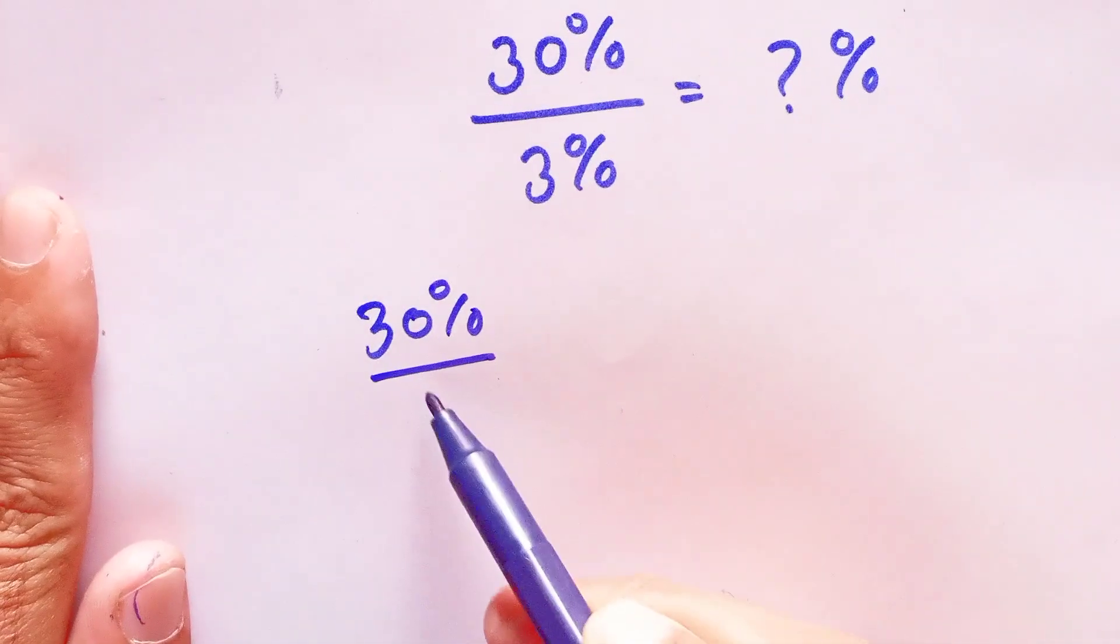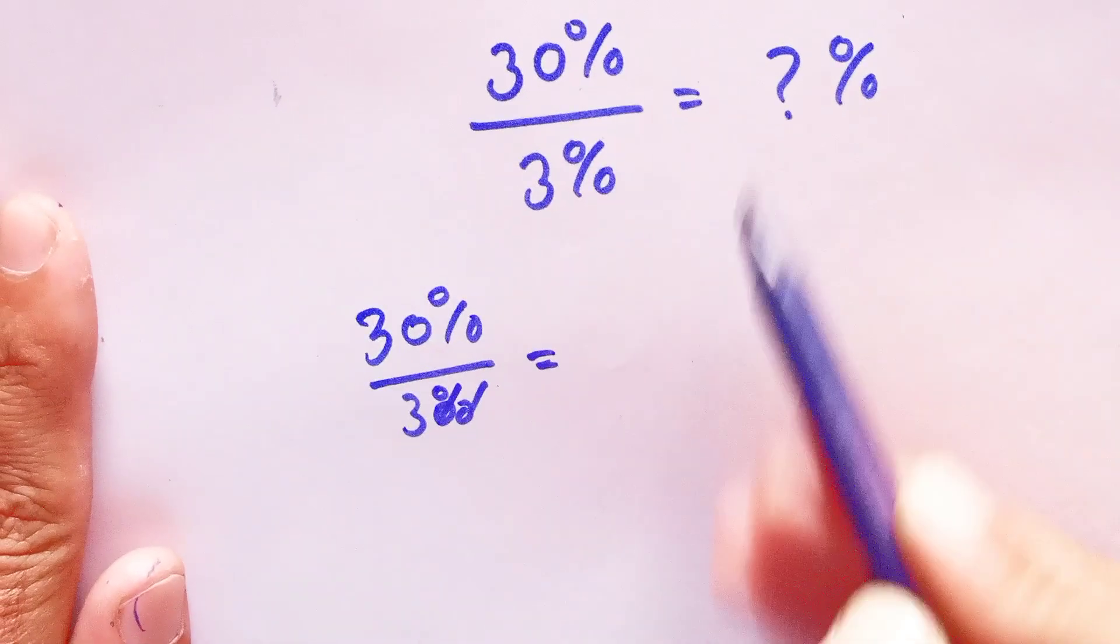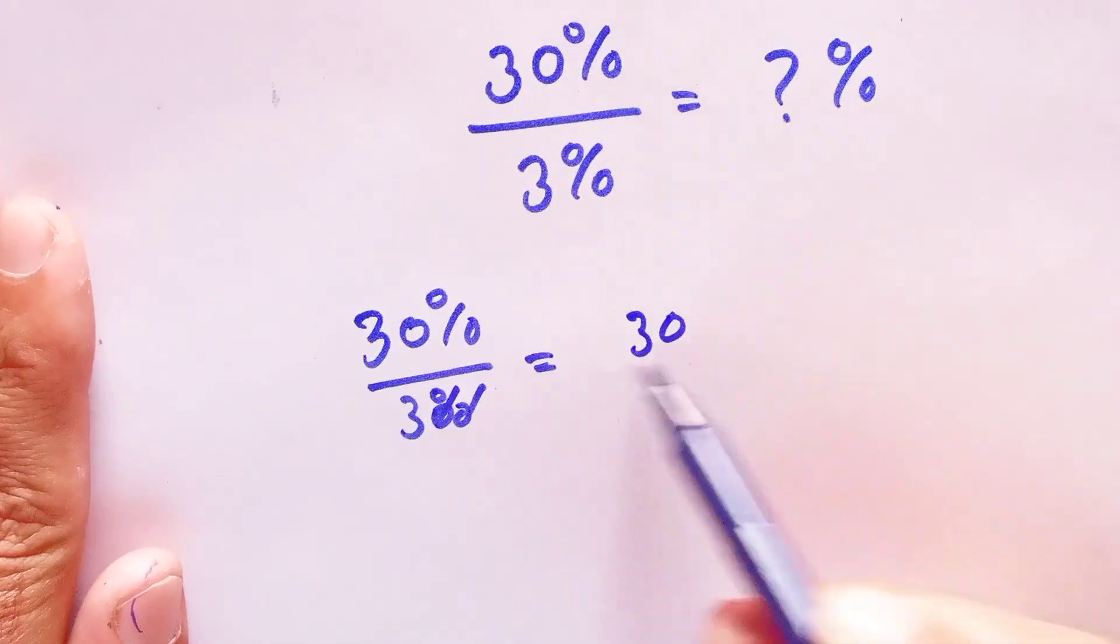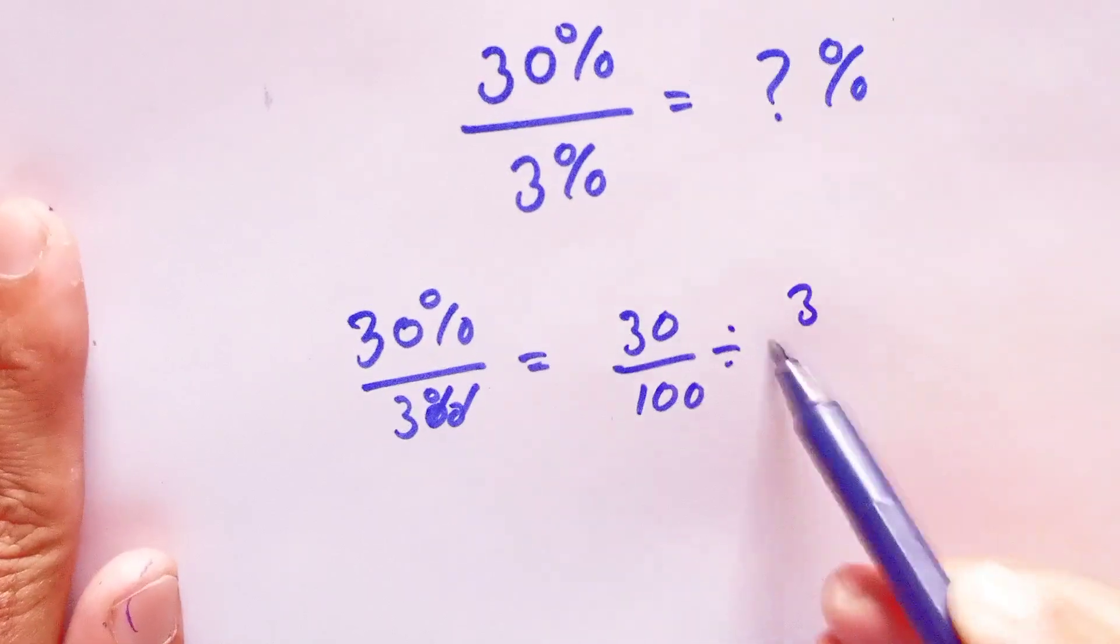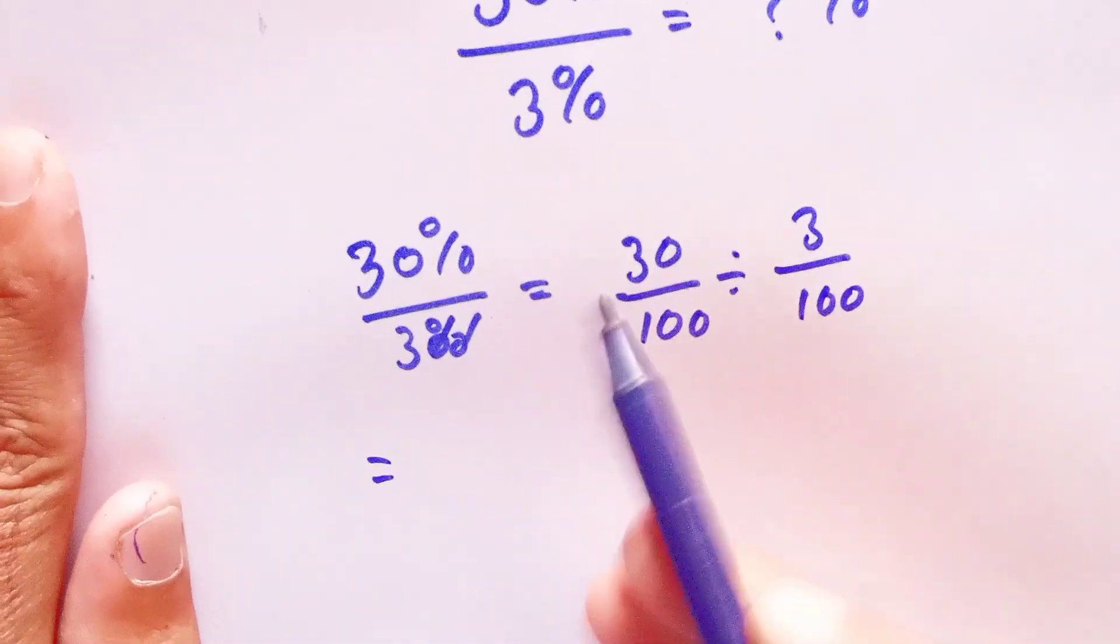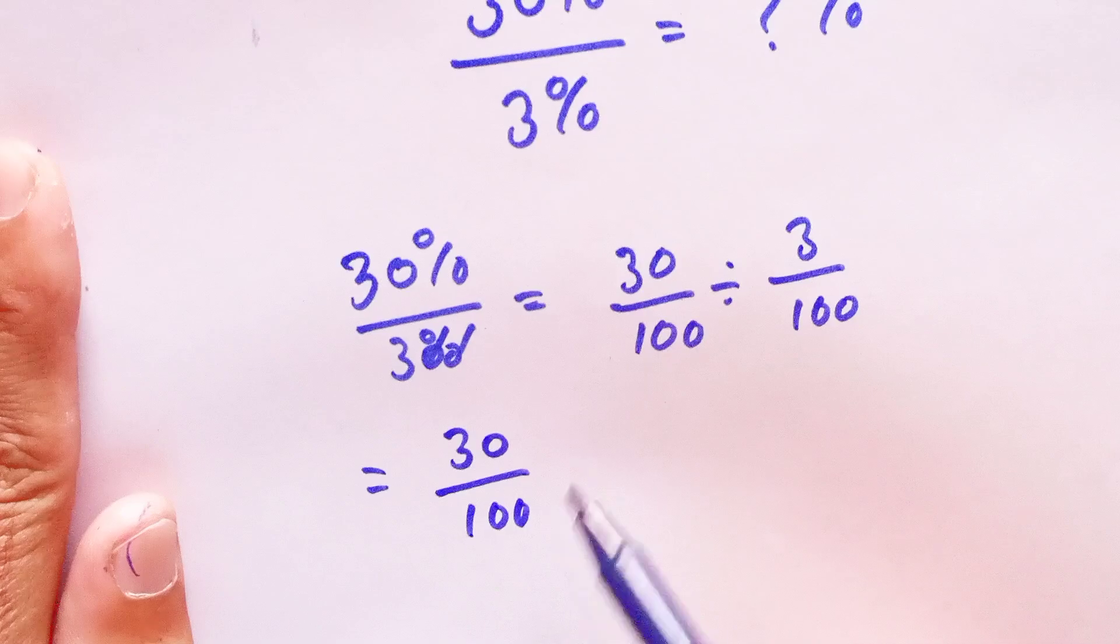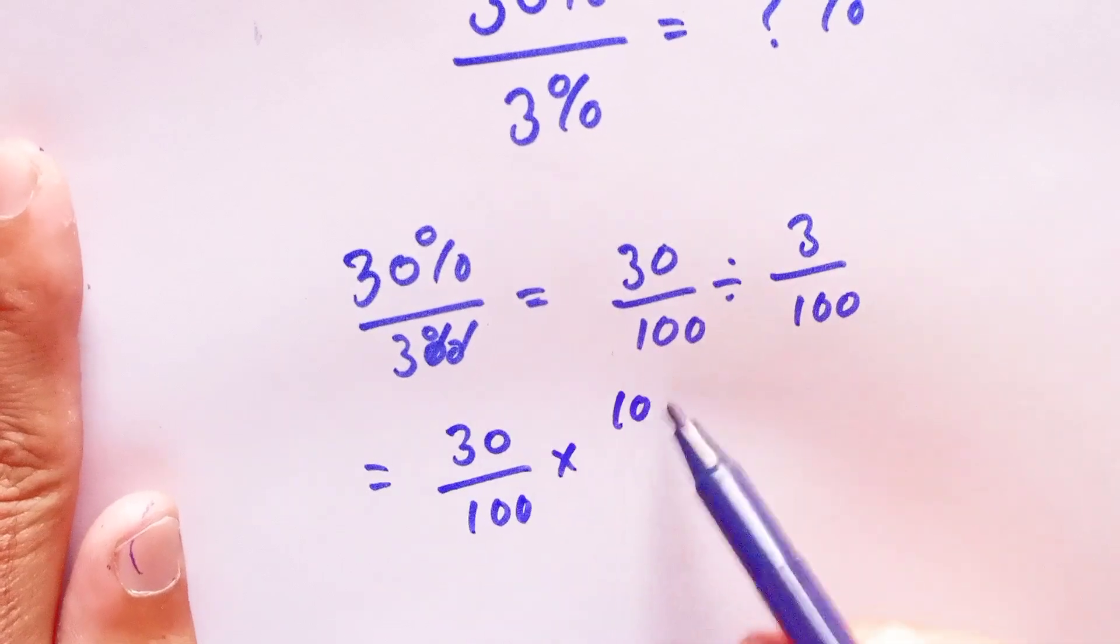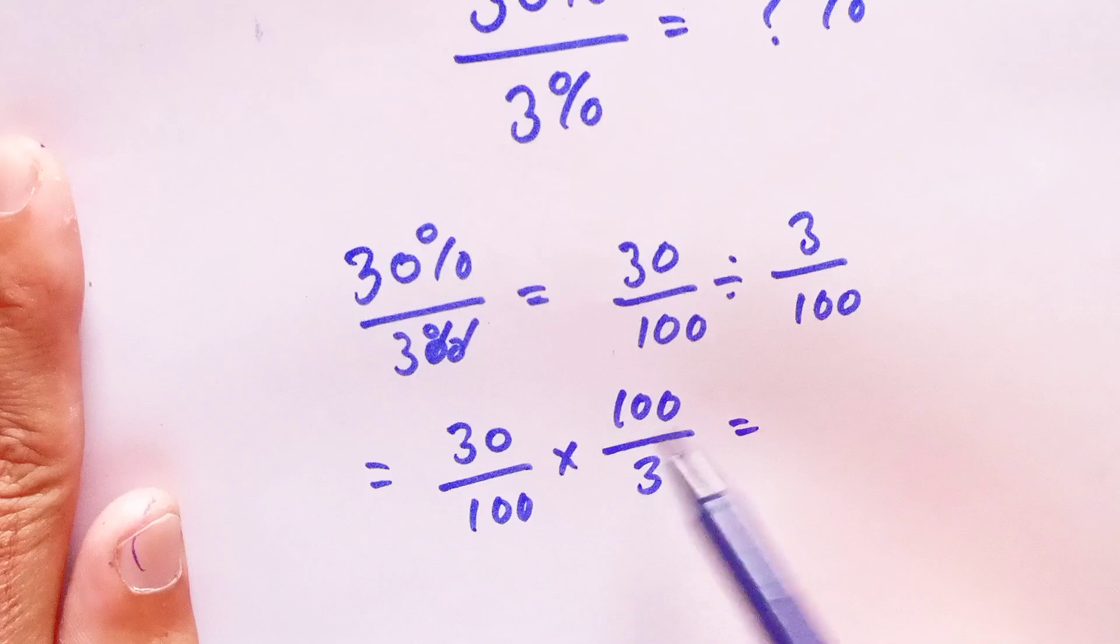30% divided by 3% is equal to 30 divided by 100, divided by 3 divided by 100, which is equal to 30 divided by 100 multiplied by 100 divided by 3.